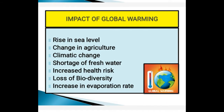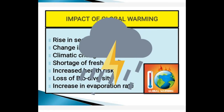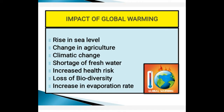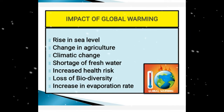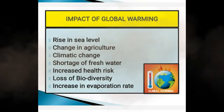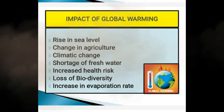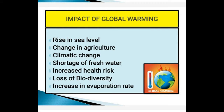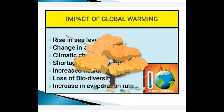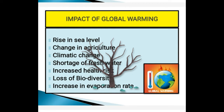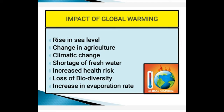The impacts of global warming include: first, a rise in sea level — as temperature increases, snow-capped mountains and glaciers melt, leading to rising sea levels and flooding in coastal areas. Second, changes in agriculture — as temperature rises, it will affect wheat-growing areas and rainfall patterns, affecting crop yields and the types of crops cultivated.